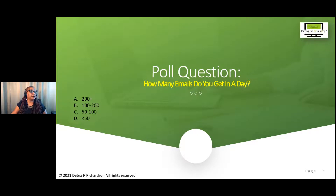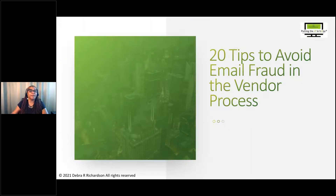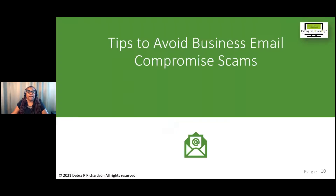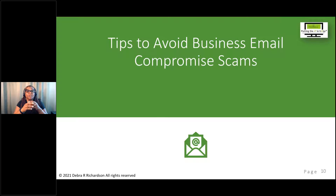Now we're at 20 tips to avoid email fraud in the vendor process — what you can do with that 15% or so of emails that get through your IT or security controls. In a business email compromise (BEC) scam, criminals send an email that appears to come from a known source making a legitimate request. In the vendor process, this means requesting to change the banking or remit address — it can be check payment fraud as well — in order to divert vendor payments.